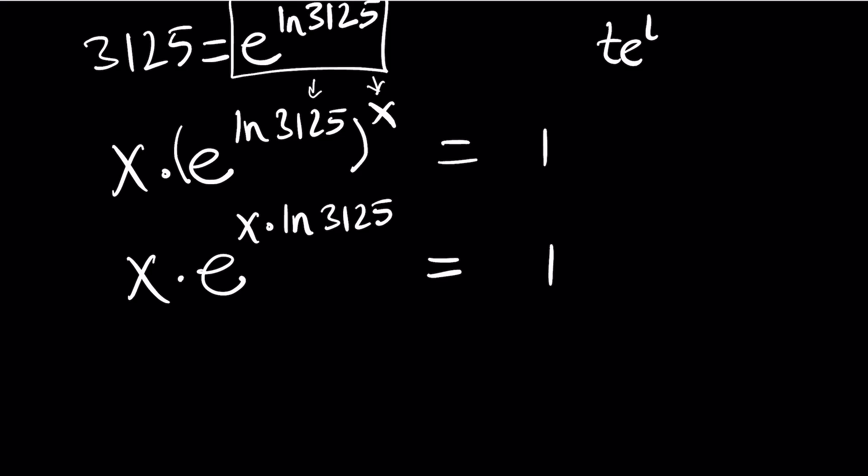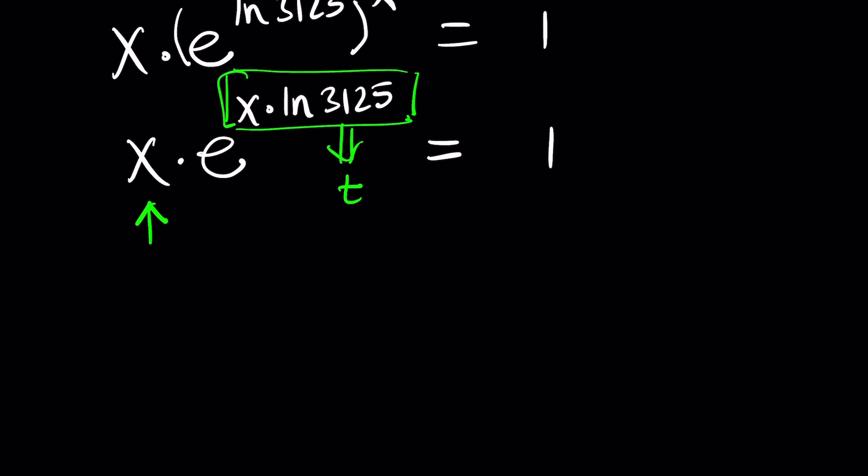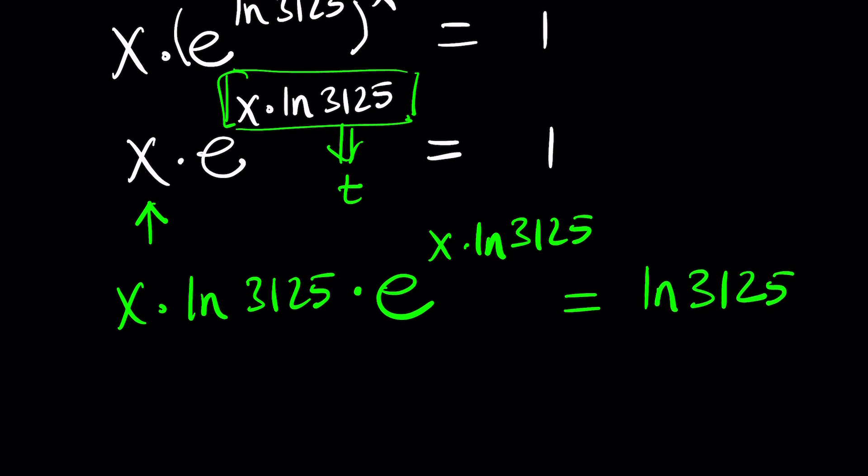Remember, the format we're trying to get is t e to the t. And we're getting closer and closer. So what should be your t then? Well, the t is supposed to be this one. Why? Because you can't really change that anymore. But you can change the x. You can multiply it by something to make it t. And this is your t. So now, let's go ahead and multiply both sides by ln 3125. x times ln 3125 times e to the power x times ln 3125 equals ln 3125. So far, so good. Are you following?